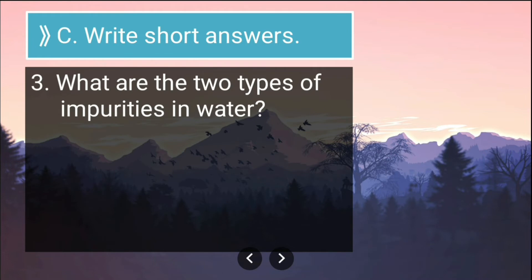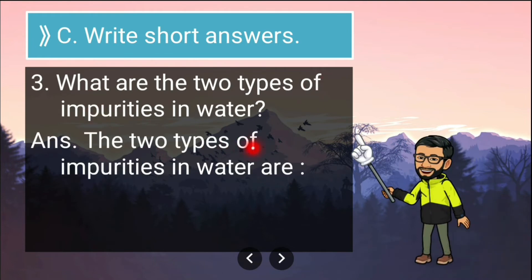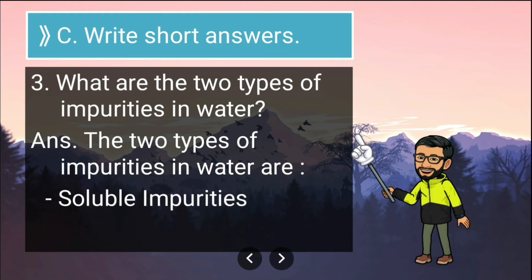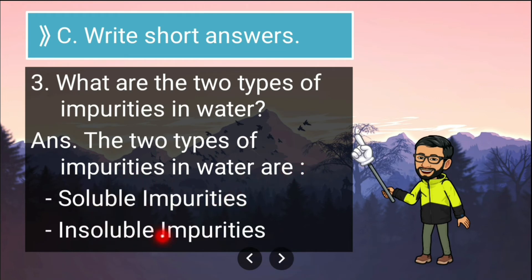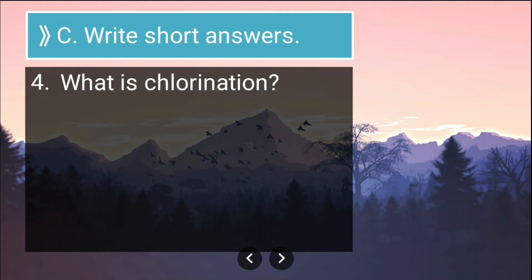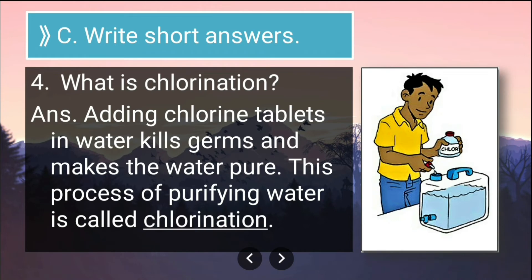Third short answer: what are the two types of impurities in water? The two types of impurities in water are soluble impurities and insoluble impurities.